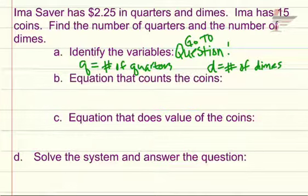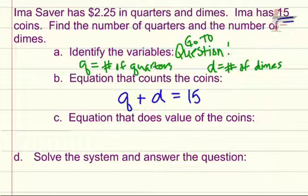Part B, the equation that counts the coins. We want to look for a total number up in the problem for how many coins we have. It says Ima has 15 coins total. So all of her quarters Q plus all of her dimes d equals 15. So all of our quarters plus all of our dimes is equal to 15 total.